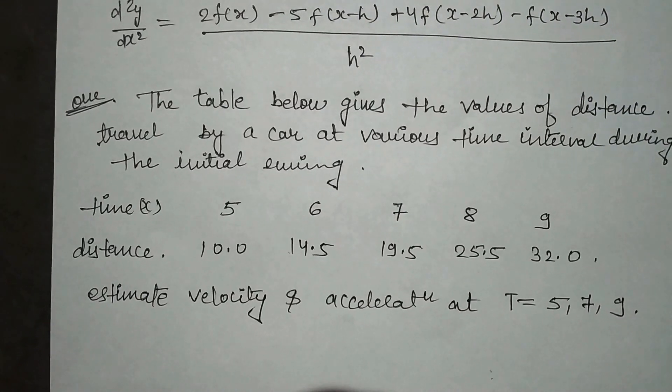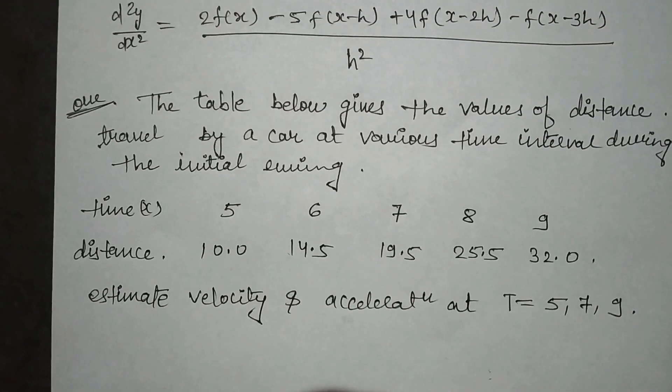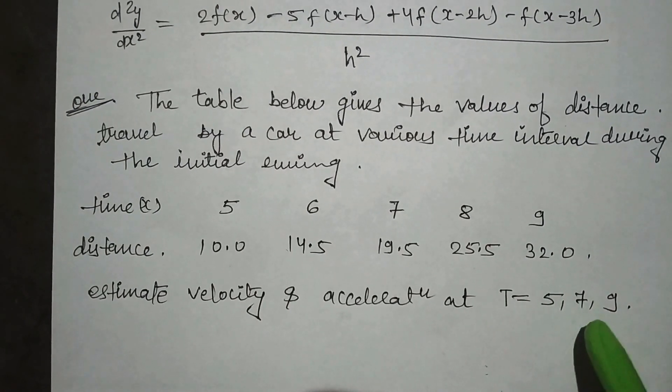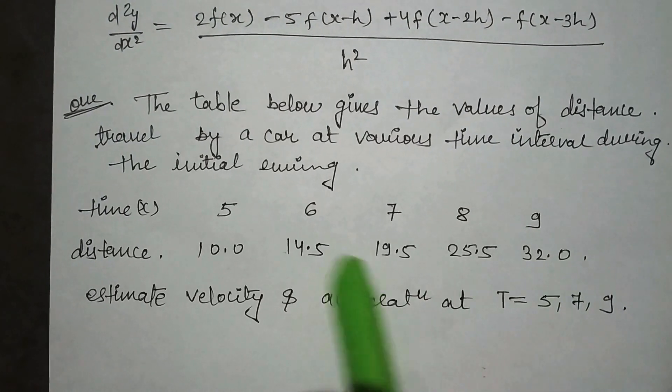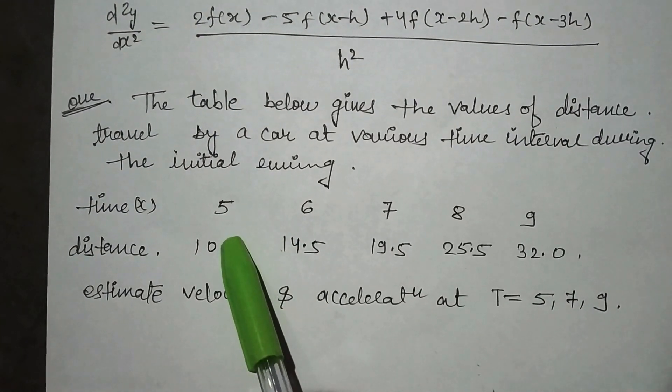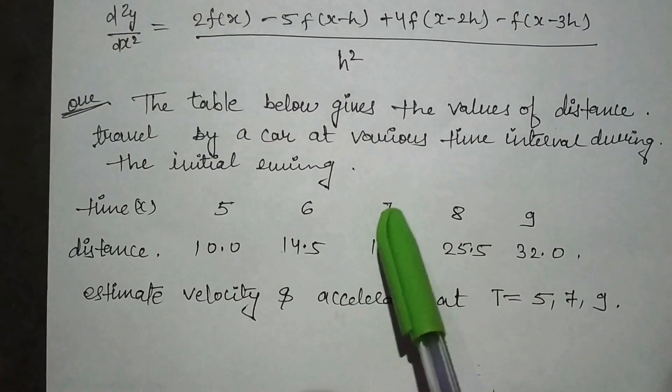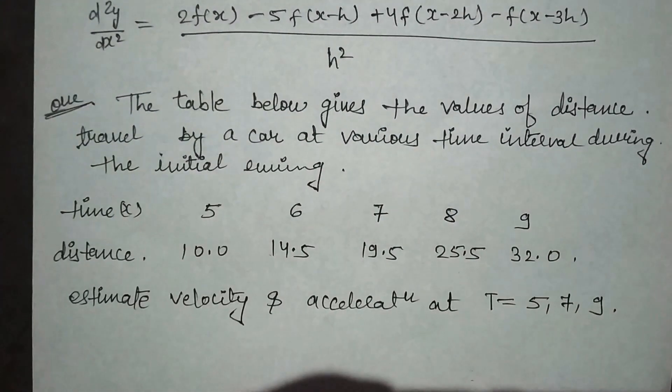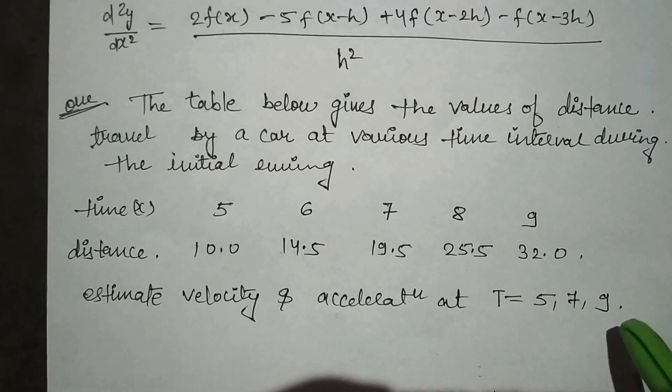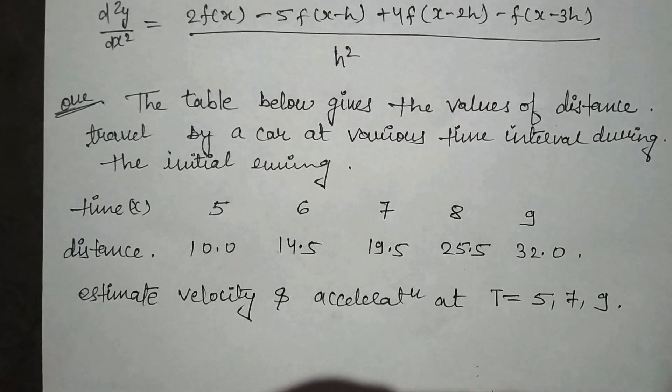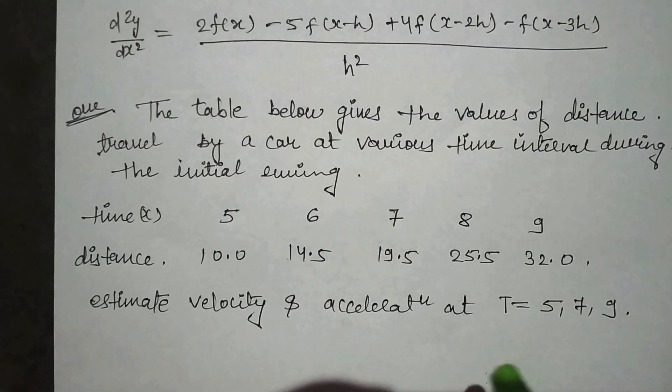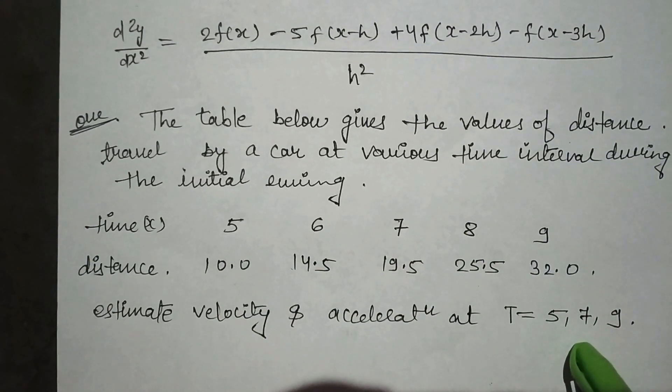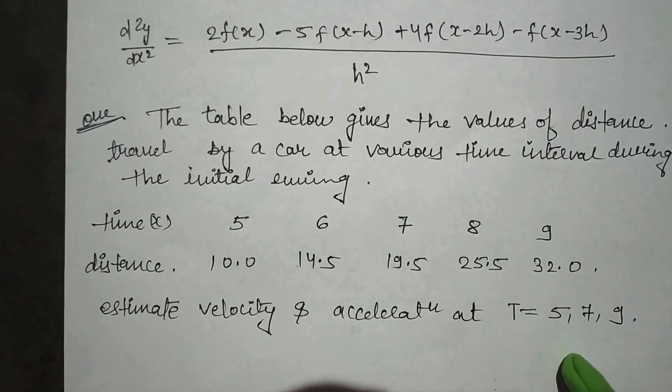This is your question. How will we know whether to apply backward, forward, or central? This data is given to you. See here, t is 5, 6, and 7. So 5 is at the starting point which means it's forward. 7 is at the mid which means it's central. And 9 is at the last which means it's backward. So you understand forward, backward, and central.